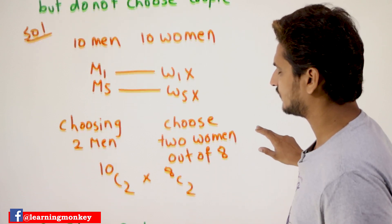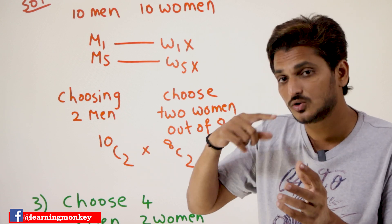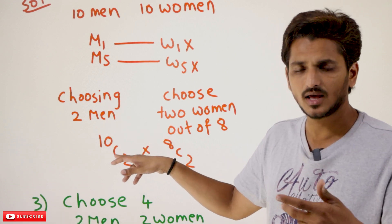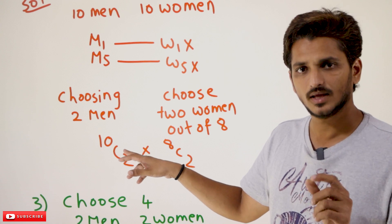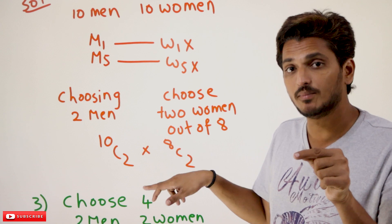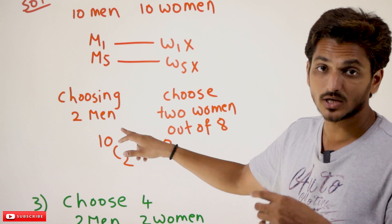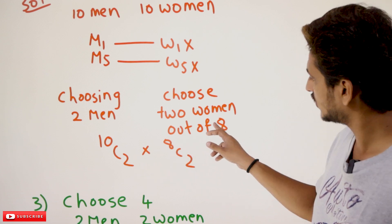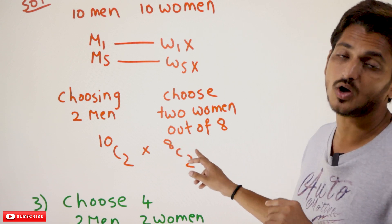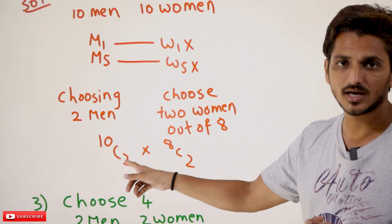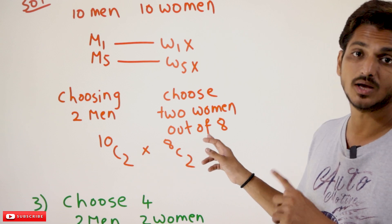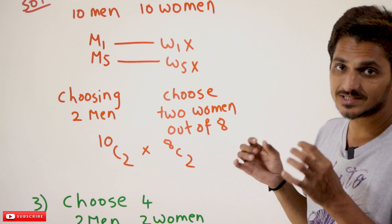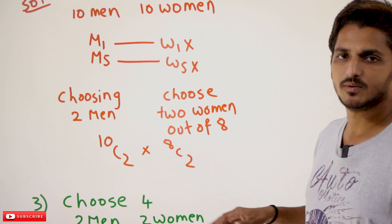In order to do that: the first step is choosing 2 men out of 10 — you can choose any 2 of them in 10C2 ways. Once you choose, say, M1 and M5, you are not allowed to choose W1 and W5. So from 10 women, those 2 women are excluded, leaving 8 women available. Out of 8, you have to select 2 in 8C2 ways. You do not have 10 women available now — that is the point to understand. Total ways: 10C2 multiplied by 8C2, ensuring no couple is included.